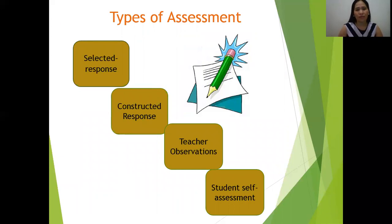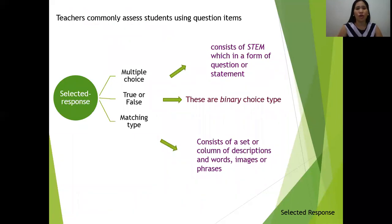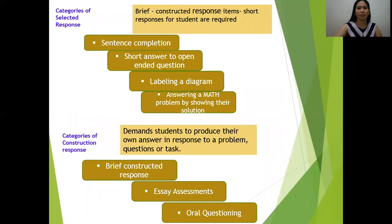Types of assessment are categorized as: selected response, constructed response, teacher observations, and student self-assessment. For selected response, teachers commonly use multiple choice, which consists of a stem in the form of a question or statement, binary choice types, and matching type, which consists of a set or column of descriptions and groups, images, or phrases. Categories of selected response include brief constructed response, which requires only short responses — such as short answers to open-ended questions, labeling a diagram, or answering a math problem by showing the solution.